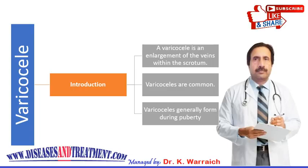The scrotum is the skin-covered sac that holds your testicles. It also contains the arteries and veins that deliver blood to the reproductive glands. A vein abnormality in the scrotum may result in varicocele, which is an enlargement of the veins within the scrotum. These veins are called the pampiniform plexus.